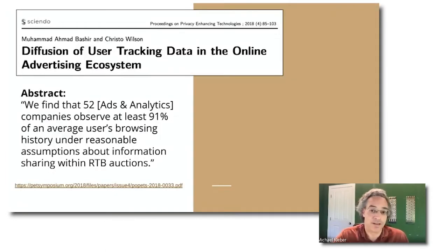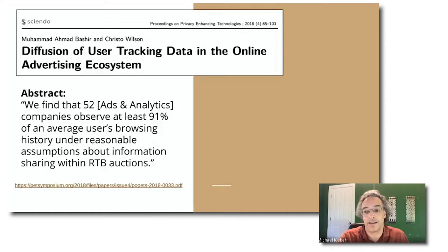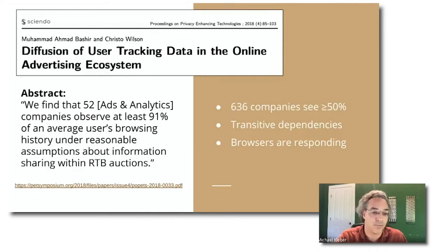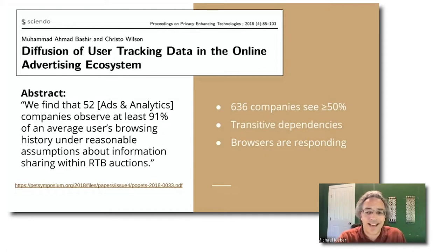But there's a problem with this system: privacy. A paper published at PET Symposium in 2018, titled 'Diffusion of User Tracking Data in the Online Advertising Ecosystem,' used an instrumented browser to browse top websites and look at information exchanges between browser and server. Their analysis found that 52 companies had access to more than 90% of the average user's browsing history, and 636 companies had access to at least 50%. These are kind of shocking numbers, even to us as browser developers.